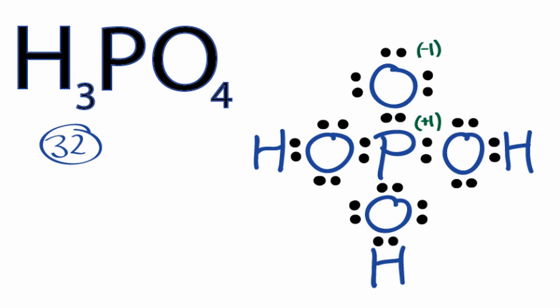We'd like this to be as close to 0 as possible, so what we can do is take and form a double bond with this oxygen and this phosphorus and recalculate our formal charges. By forming this double bond right here, we now have a formal charge of 0 on the phosphorus and on the oxygen. Everything else has a formal charge of 0.